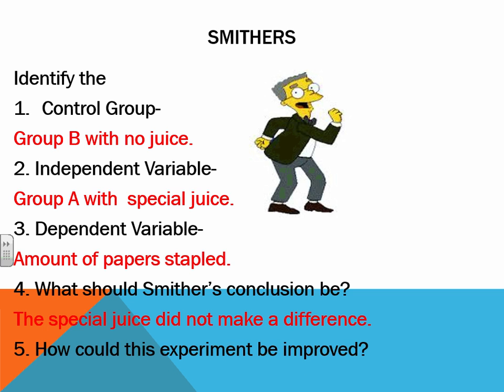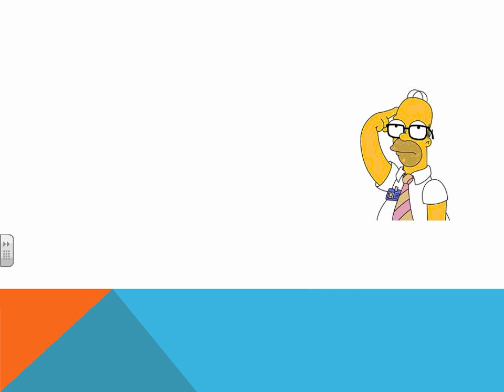How could the experiment be improved? You can have one week with the juice for all the employees and then see how many papers they staple. You could do a week where you give no treatment and see how many papers they staple, and come up with great ideas on how you can improve that experiment.